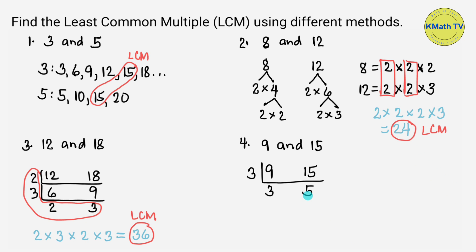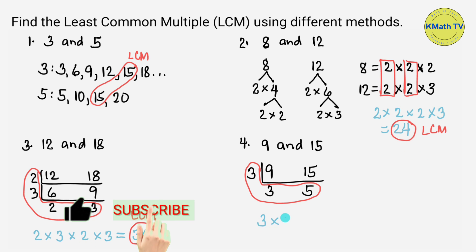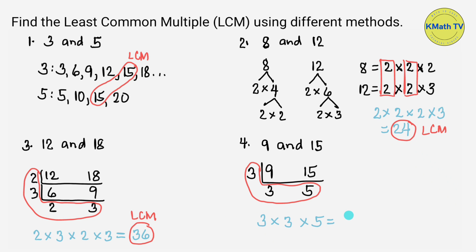We will stop dividing now because their only common factor is 1. To find the LCM, we multiply the prime divisor and the quotients: 3 times 3 times 5. 3 times 3 equals 9, and 9 times 5 equals 45. The LCM of 9 and 15 is 45.